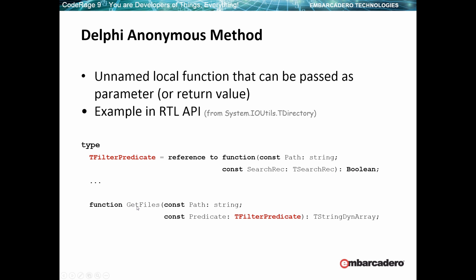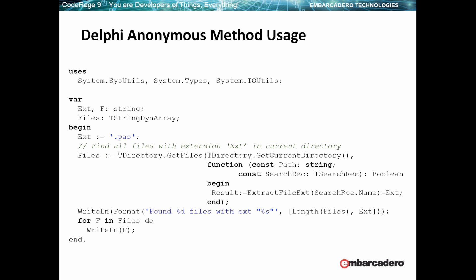How do you use it? Here's an API that expects one such thing — getFiles. You give it a path and it wants one of those predicates. The way it works is you call getFiles, you give it the directory where you want to search. Behind the scenes it's doing FindFirst, FindNext if you remember the old APIs. But it also gives you the flexibility of selecting which files you really want to find, and the way you do that is you give it a little anonymous method.